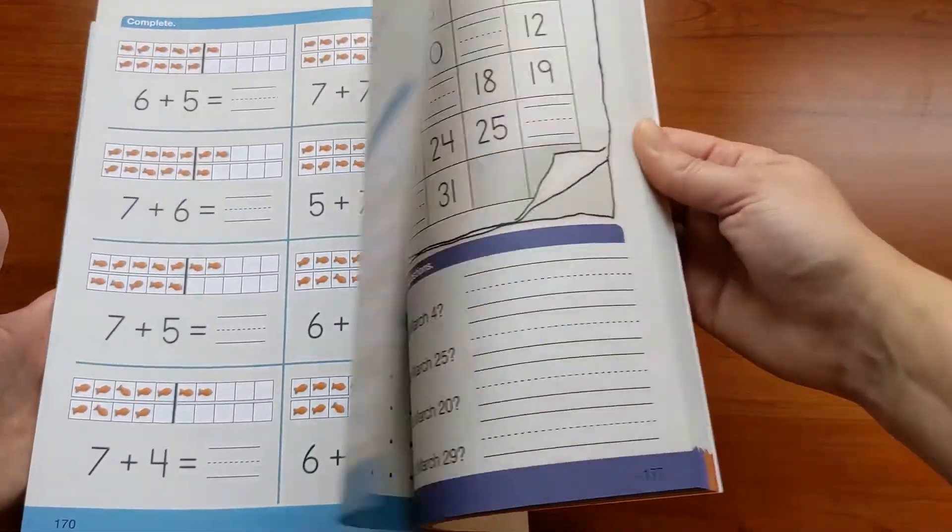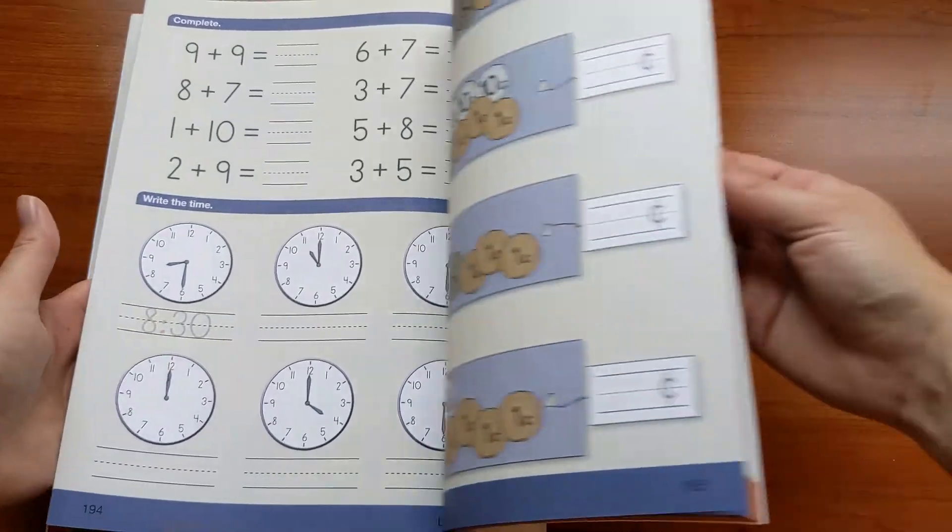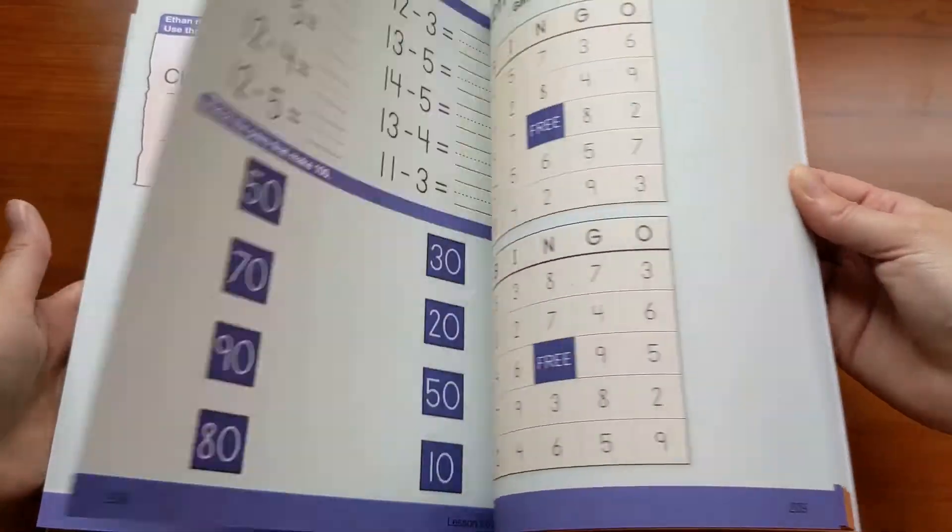You can see there's a bit of a rainbow progression as you move through the year, which really gives kids a great sense of moving through the rainbow, moving through the year, making some progress.